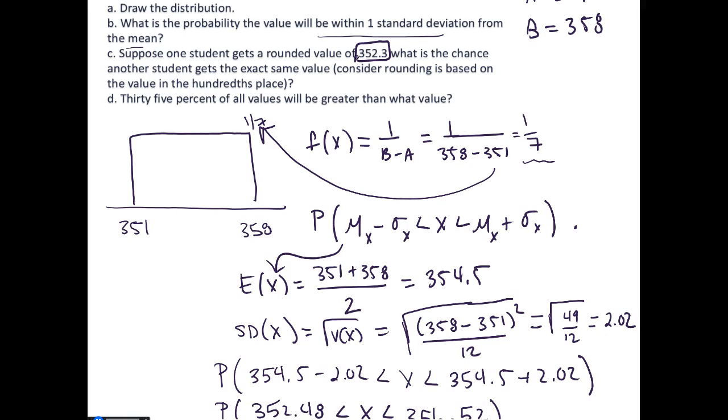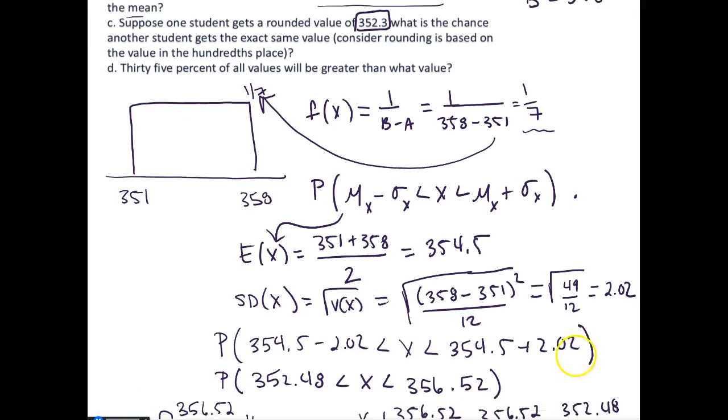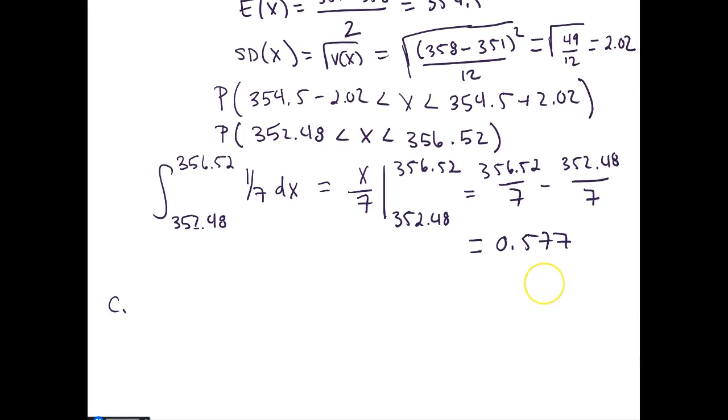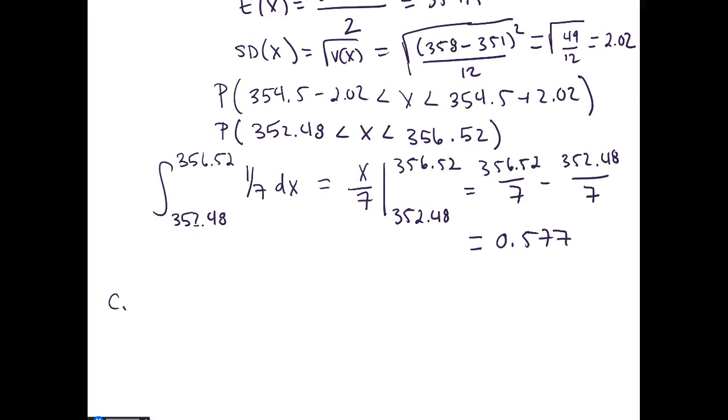It has a range of likelihood of becoming 352.3. If we think of what values would round to 352.3, those values would have a lower bound of 352.25 and an upper bound of 352.34. If we round based on the hundredths place, this would round down to 352.3.